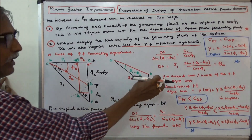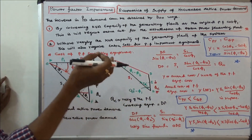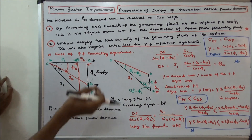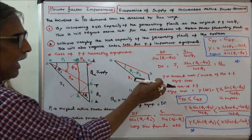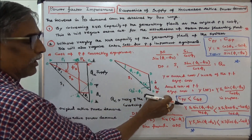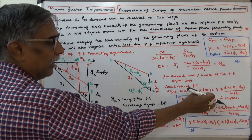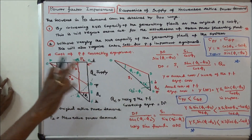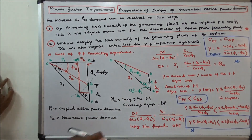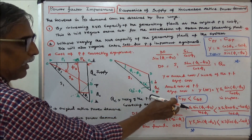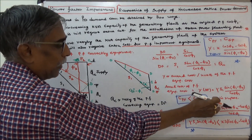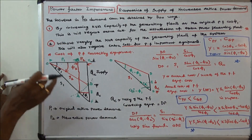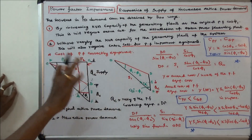Let Y be the annual cost per kVAR of the power factor correcting equipment. Therefore, the annual cost of the power factor equipment is equal to Y into DF, that is, Y into S1 into sine(phi 1 minus phi 2) divided by cos phi 1. The cost of the power factor equipment should be less than the cost of the generating plant.